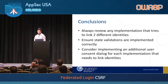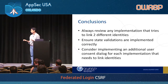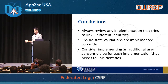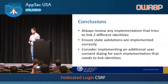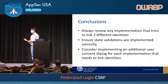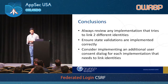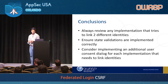Coming to the conclusions: whenever you're linking two identities, be very careful and always review that scenario. Ensure that state validations are implemented correctly — this prevents the known CSRF attacks, not the new one. And consider implementing a second consent dialogue for this identity-linking scenario, even though it's not a great user experience, because it helps with security.